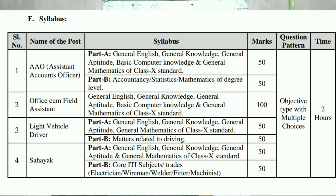For the Assistant Account Officer post, the exam is 50 marks. Part A covers general English, general knowledge, general aptitude, basic computer knowledge, and general mathematics of class 10 standard. Part B is accountancy or statistics, and mathematics of degree level.